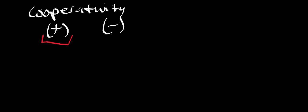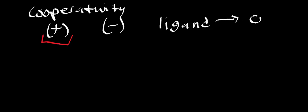Oxygen is called the ligand here. A ligand is just something that binds to either a receptor, a cofactor, or some kind of protein. In the case of hemoglobin, the ligand is oxygen. If you have a neurotransmitter, that would be the ligand for its particular receptor. There are lots of types of ligands.